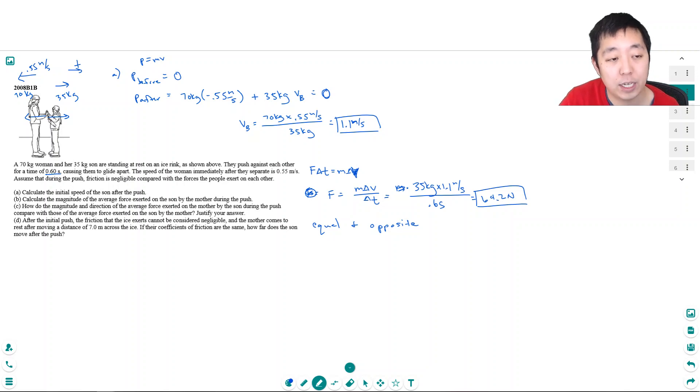For every action there's an equal and opposite reaction. These are equal and they're opposite. That's Newton's law. You could calculate it too if you want. You could do the change in momentum of the woman the same way. You'll see the 35 will be doubled to 70, but this would be halved and over the same time, so you get the exact same number.